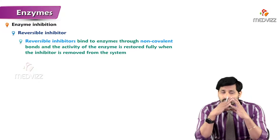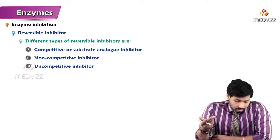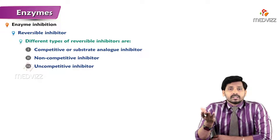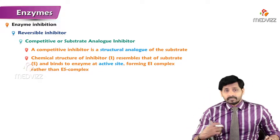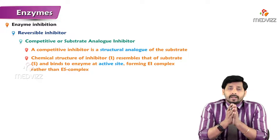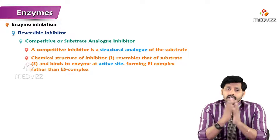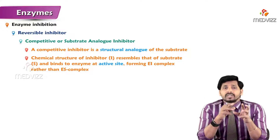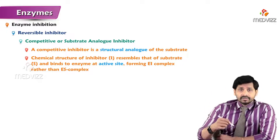Reversible inhibitors are subcategorized as competitive, non-competitive, and uncompetitive. The first is competitive inhibition, also called substrate analog inhibition. The inhibitor is similar in structure to the substrate, so the enzyme cannot distinguish between them — whoever arrives first gets to react. There is a huge competition between substrate and inhibitor for the active site of the enzyme.